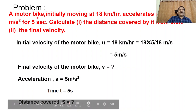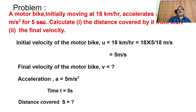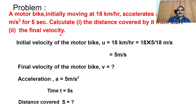A motor bike initially moving at 18 kilometers per hour accelerates at a rate of 5 meters per second square for 5 seconds. Calculate the distance covered by it and also calculate the final velocity.